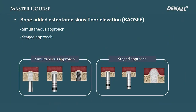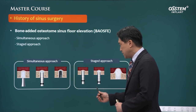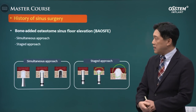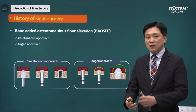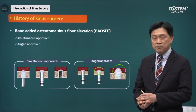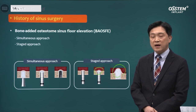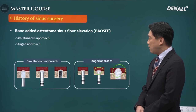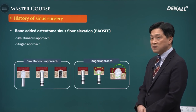Next, I'm going to talk about BAOSFE — bone added osteotomy sinus floor elevation. Summers' osteotome is used to fracture the sinus floor, and within the sinus, bone is added. The sinus floor is elevated, and using this, bone regeneration is achieved. This can be done at the same time as implant placement, or you can do a staged approach — sinus floor elevation to generate bone, and then implant placement. You can do two kinds of approaches with BAOSFE.